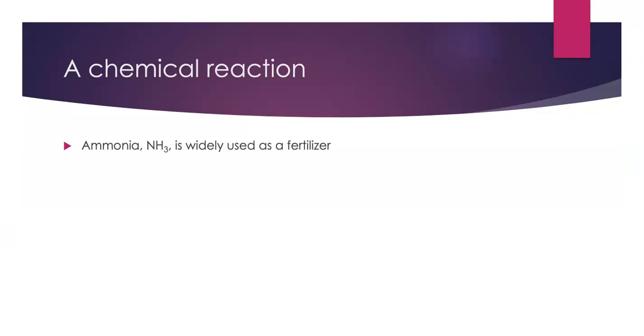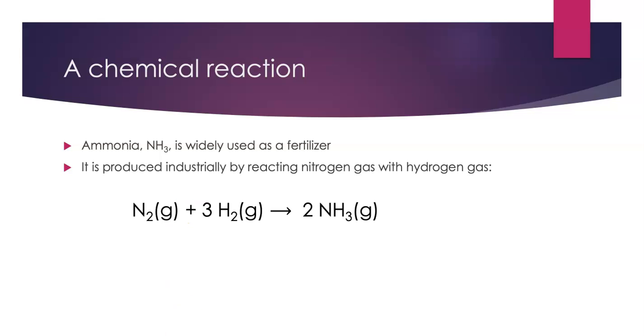Ammonia, which has the formula NH3, is widely used as a fertilizer. It's an important industrial chemical. It's produced on a very large scale by reacting nitrogen gas with hydrogen gas, and we can write a balanced equation for the synthesis of ammonia from its elements.